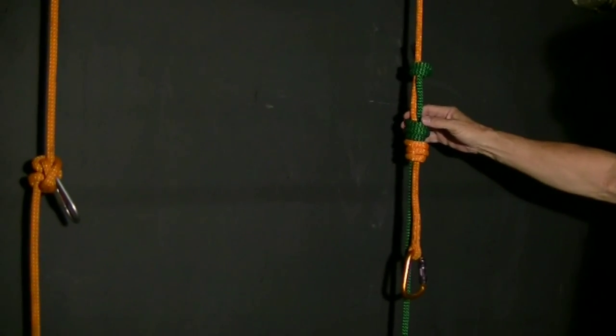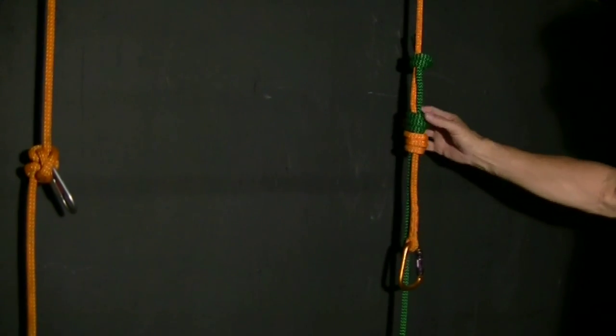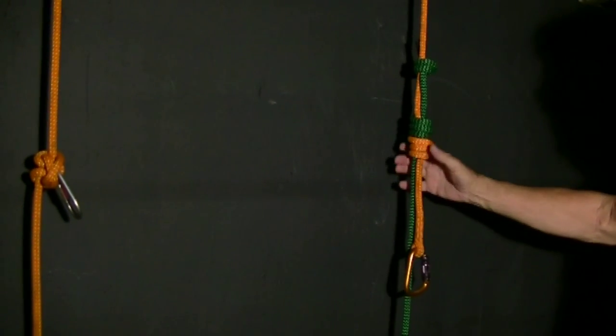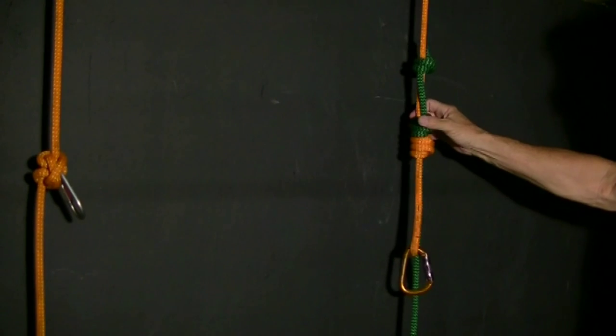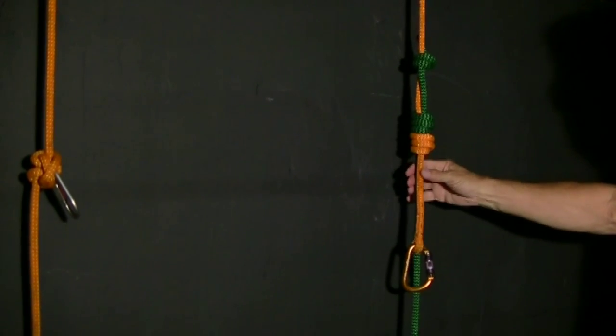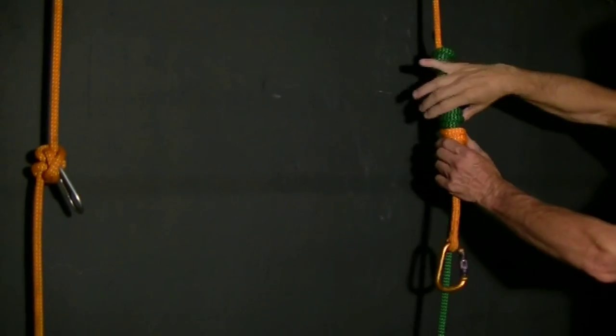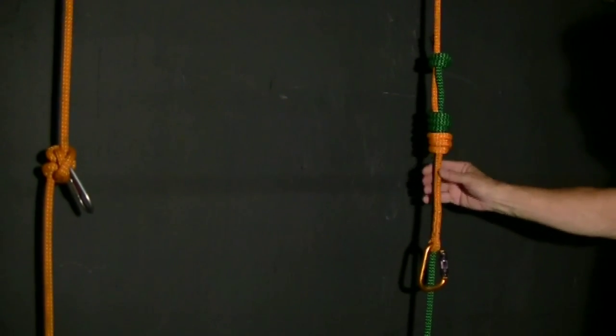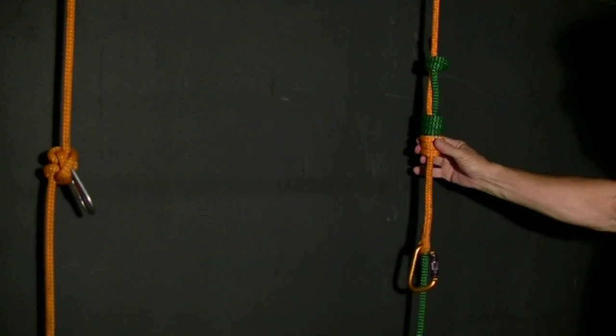The nice thing about the triple double fisherman's knot is that it's much easier to untie. It's not that it's more secure—although it is—but the real advantage is the added ability to untie it after it's been weighted.